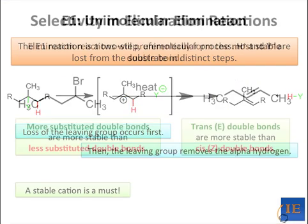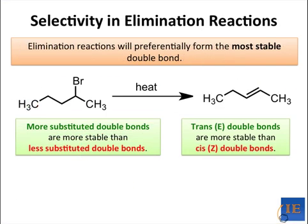E1 reactions are governed by the same selectivity rules as E2 reactions. More substituted trans-double bonds are formed in preference to less substituted cis-double bonds. Keep in mind that E1 reactions form stable double bonds just like E2 reactions.